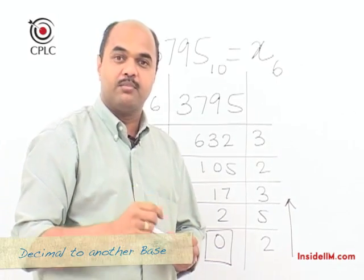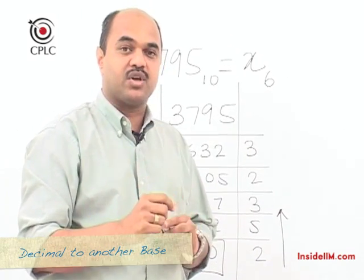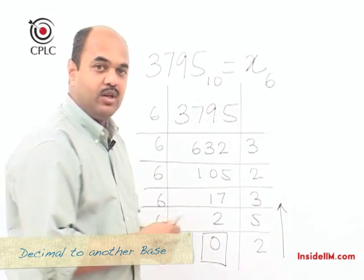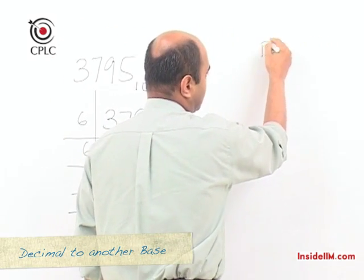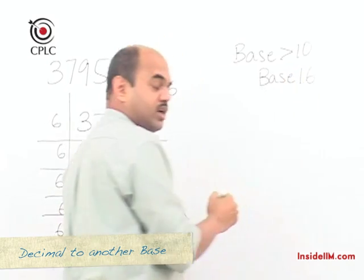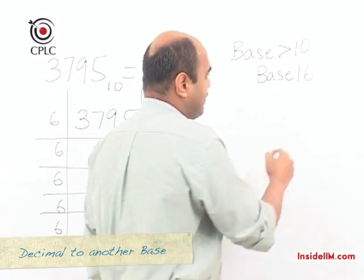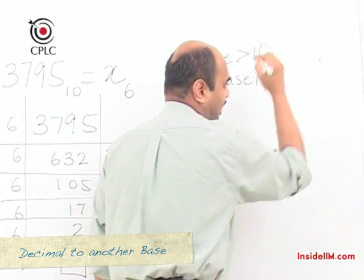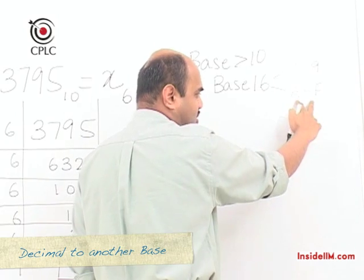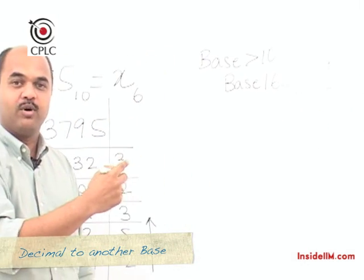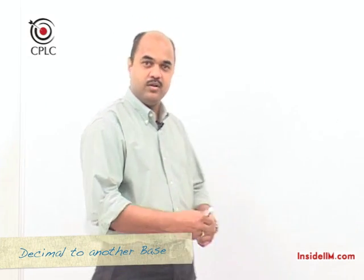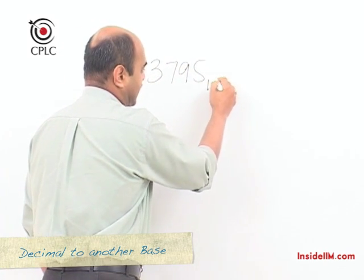We will take up another example to understand how to convert when the base is greater than 10. Up to base 10 we can make use of 10 digits which would be 0 to 9, but when you have a number system with a base greater than 10 — for example base 16 — we would need 16 digits, made up of the 10 digits from 0 to 9 and then alphabets from A to F, making up 6 additional digits. If we now look at the same number 3795 in base 10 and try to convert it into base 16, we will need to make use of those 10 digits and 6 alphabets.